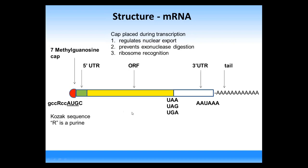Translation of a messenger RNA starts with a 5' untranslated region, which will not appear in the subsequent protein. The protein is encoded by the open reading frame. Stop codons signal the end of amino acid addition; they are UAA, UAG, and UGA. After the open reading frame, there is a 3' untranslated region containing the sequence AAUAAA, which signals addition of a poly-A tail.